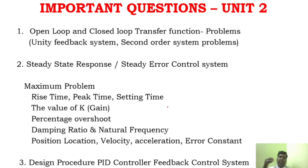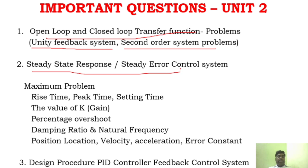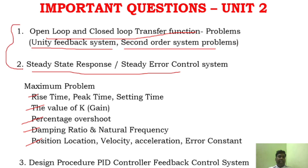There are four different types of problems in Unit 2, and that is more than enough. Mostly problems involve open-loop and closed-loop transfer functions. Most questions are in those areas. You will also have unity feedback system and second-order system problems. Steady-state response and steady-state error problems cover: rise time, peak time, settling time, value of K, percentage overshoot, damping ratio, and position, velocity, acceleration error constants.